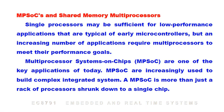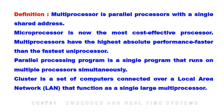A MPSOC is more than just a rack of processors shrunk down to a single chip. A multiprocessor is a parallel processor with a single shared address space. Multiprocessor is now the most cost effective processor, having the highest absolute performance — faster than the fastest uniprocessor.